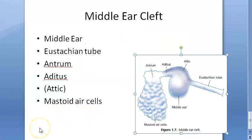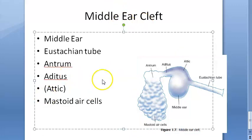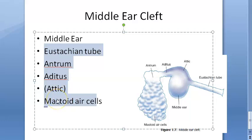The middle ear cleft is filled with air and is lined by mucous membrane. Regarding development: the eustachian tube, tympanic cavity, attic, antrum, and mastoid air cells all develop from the endoderm of the tubo-tympanic recess, which arises from the first and partly from the second pharyngeal pouch — those pharyngeal pouches you've learned in embryology.